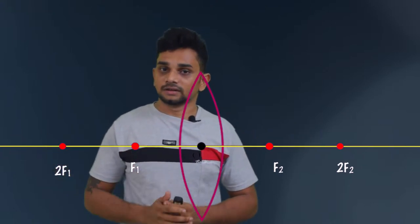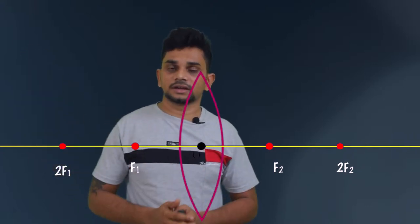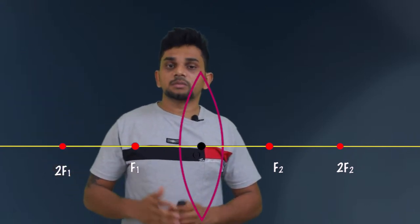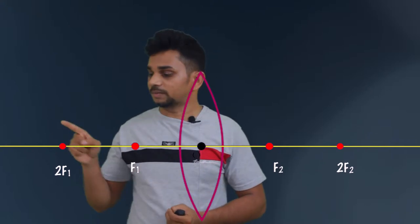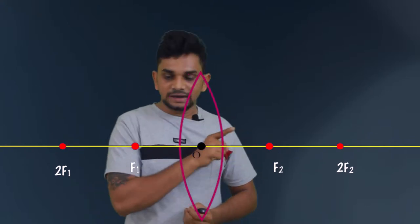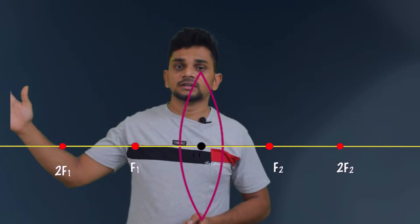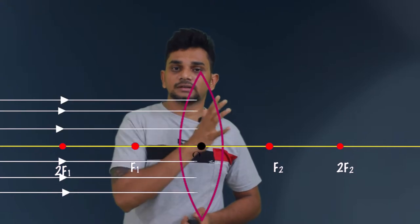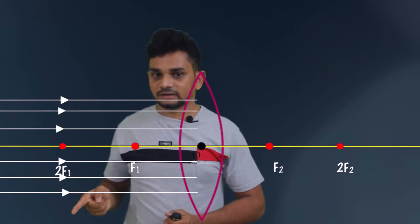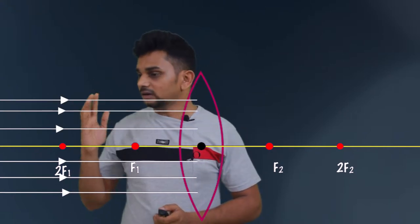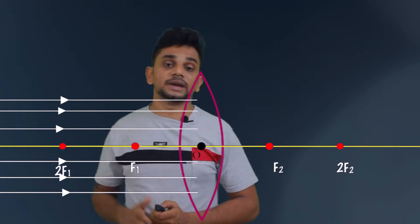The position of the object is at infinity. So we are considering a number of light rays which are parallel to the principal axis. All these rays are parallel to the principal axis, as you can see here.